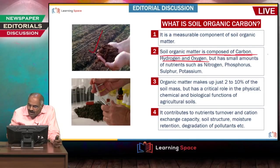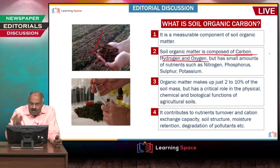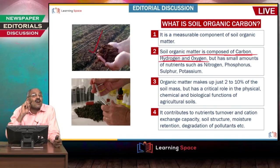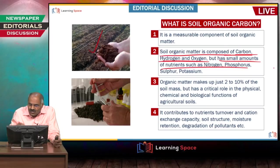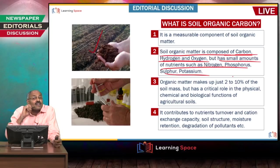Soil organic matter is composed of carbon, hydrogen, and oxygen, but also has small amounts of nutrients such as nitrogen, phosphorus, sulphur, and potassium.